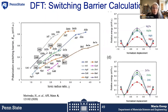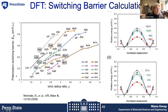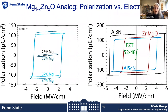Working closely with Professor John Paul Maria in materials science and engineering, we found that zinc oxide is predicted to have a small energy cost for polarization switching among wurtzite-structured compounds. Sure enough, he grew it and observed a beautiful ferroelectric hysteresis loop with much smaller coercive fields than seen in the nitride analogs. We're now aggressively pursuing this for three-dimensional ferroelectric microelectronics.